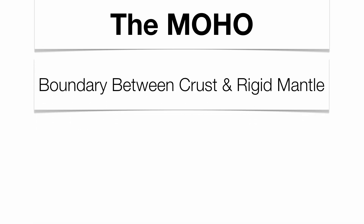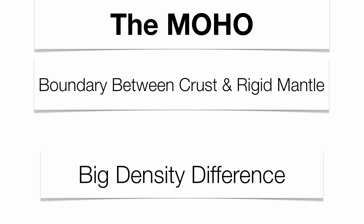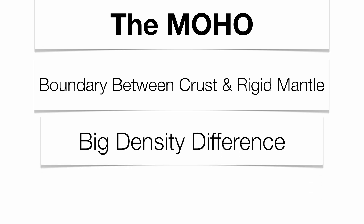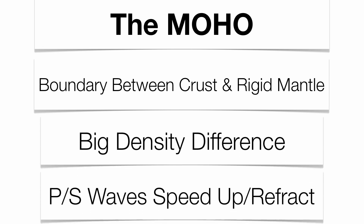The Moho is a boundary between the crust and the rigid mantle. What separates the two layers? Density. Through the study of P-waves and S-waves, we've been able to discover that when earthquake waves exit the crust and enter the rigid mantle, not only do they speed up, but they also bend. The fancy word for bending is refraction, and that's all caused by a density difference. That boundary between the crust and the rigid mantle is what we call the Moho.